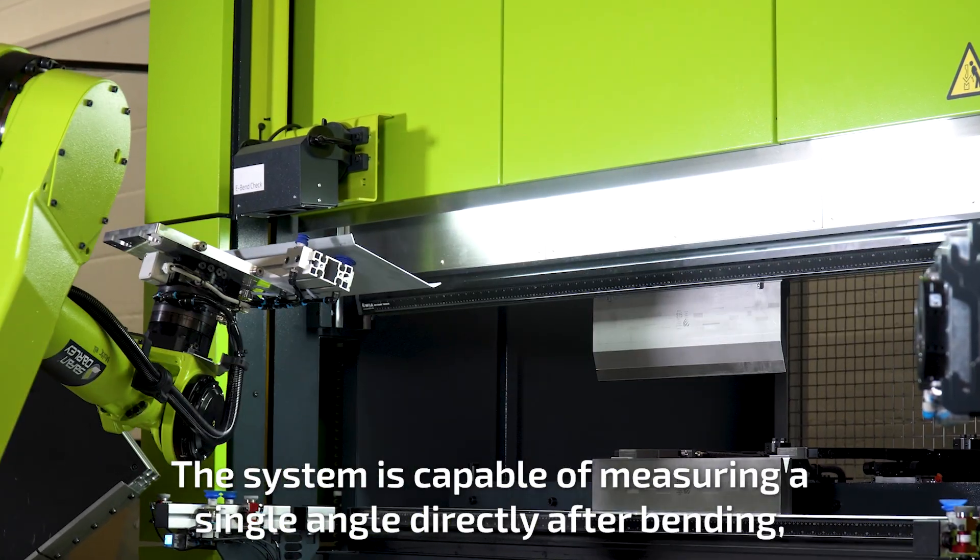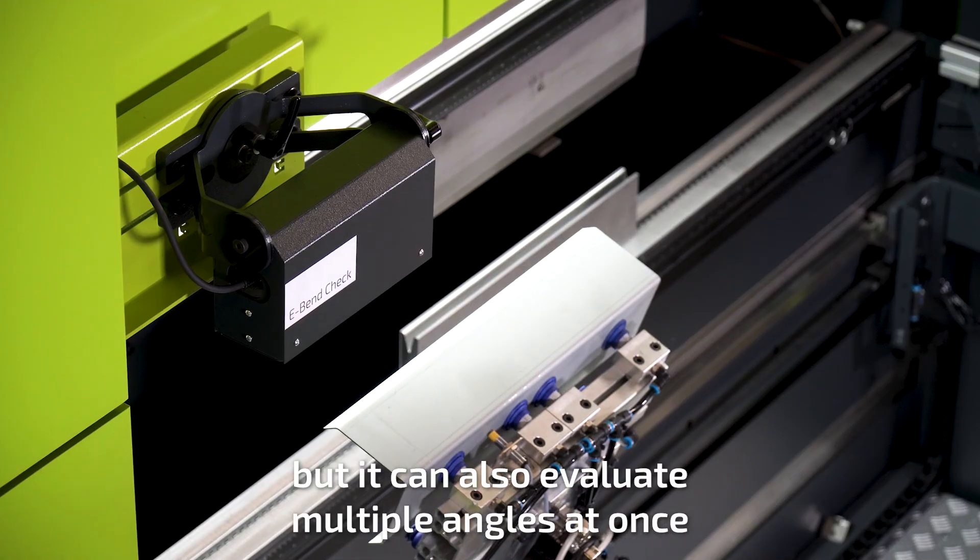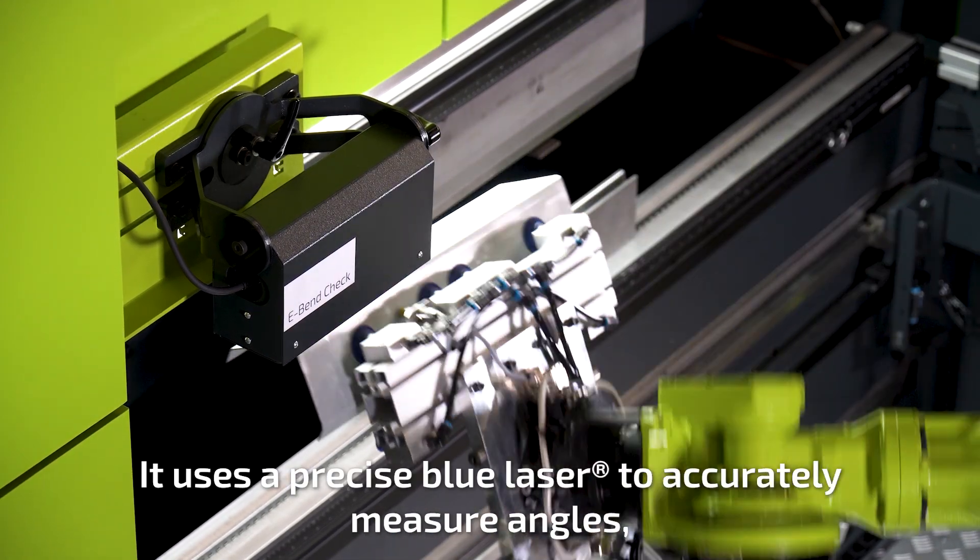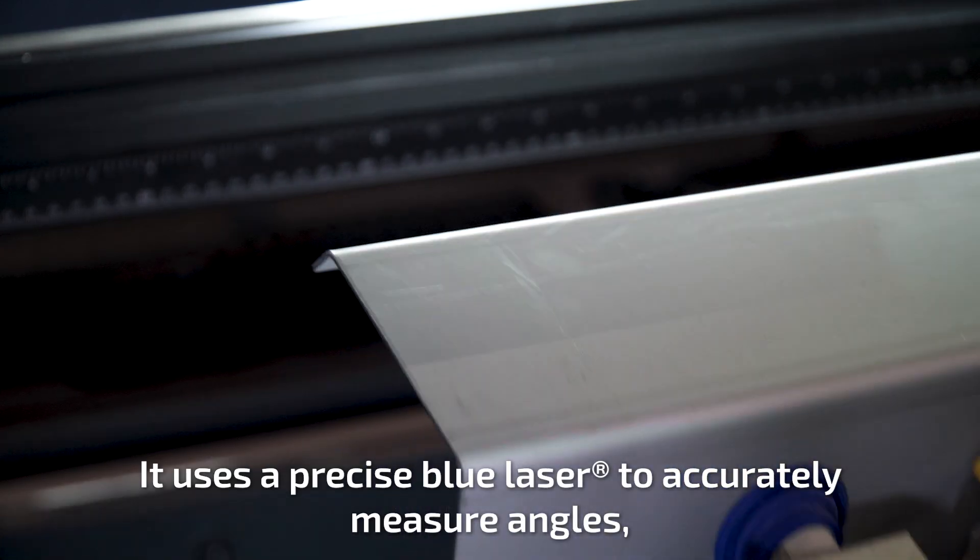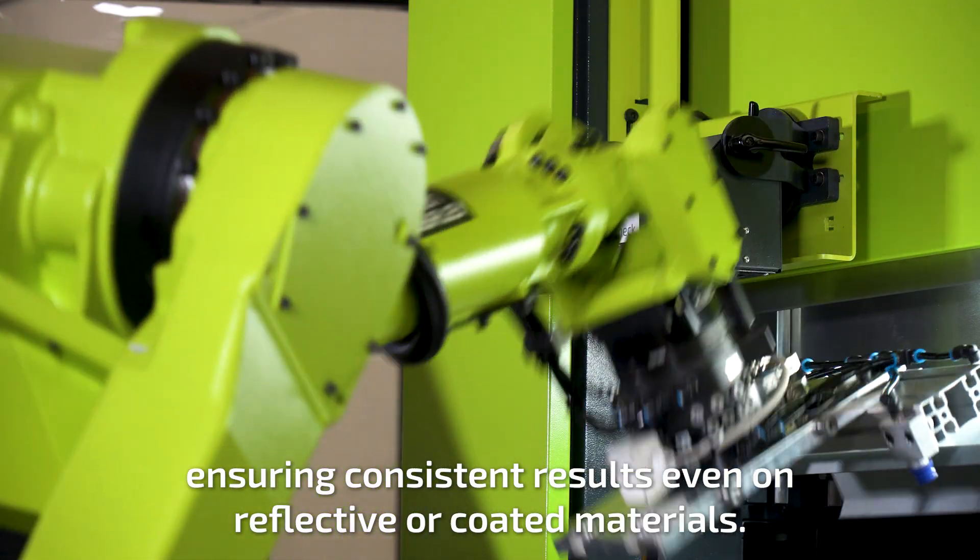The system is capable of measuring a single angle directly after bending, but it can also evaluate multiple angles at once after several bends have been made. It uses a precise blue laser to accurately measure angles, ensuring consistent results even on reflective or coated materials.